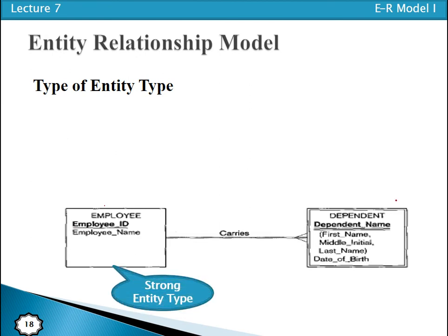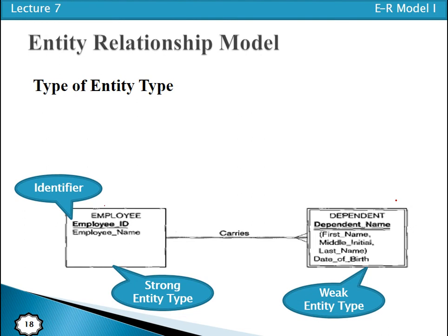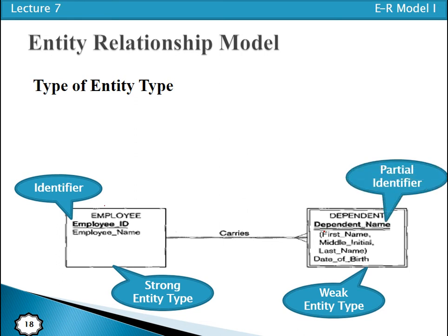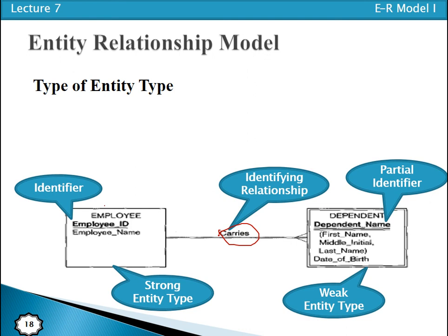The 'Dependent' entity is a weak entity type and has a partial identifier, Dependent Name. Whenever we have a relationship between a strong entity type and a weak entity type, that relationship is called an identifying relationship. The relationship between a strong entity type and a weak entity type is specifically called an identifying relationship.